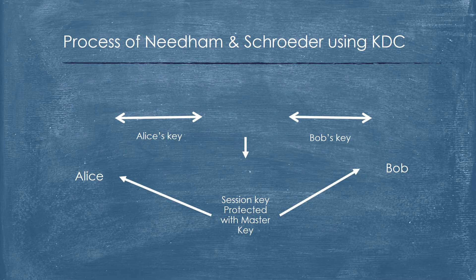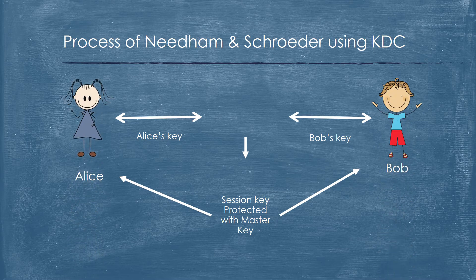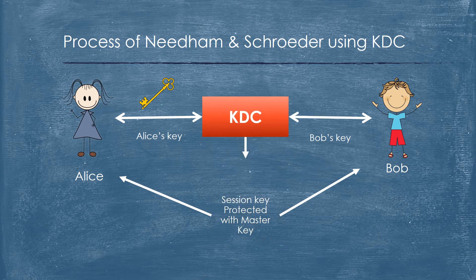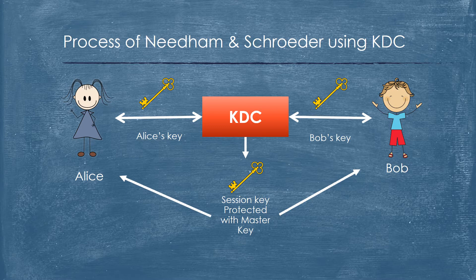This is a simple understanding of how connection is done with KDC. First, Alice wants to send a message to Bob. To do that, Alice must send her secret key to KDC to generate a session key for Alice. KDC will also do the same for Bob's secret key by generating a session key for him. Once both Alice and Bob have their session keys verified, they can start their communication.